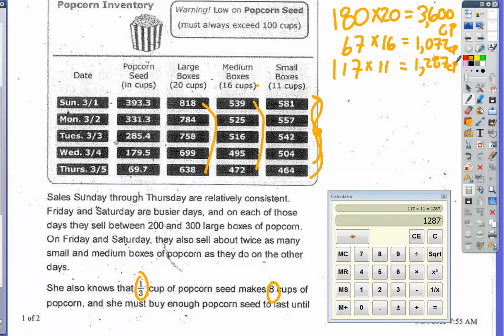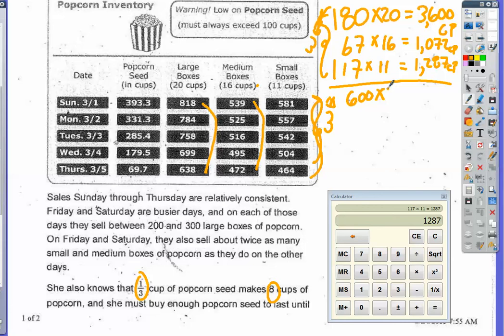Now I have to account for Friday and Saturday. On each of those days they sell between 200 and 300 large boxes. To avoid running short, I'll estimate 300 boxes per day, so that's an additional 600 large boxes for the weekend. 600 boxes times 20 cups equals 12,000 cups of popcorn from large boxes on the weekend.